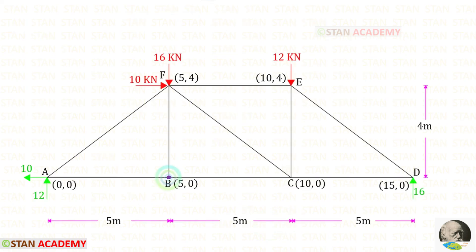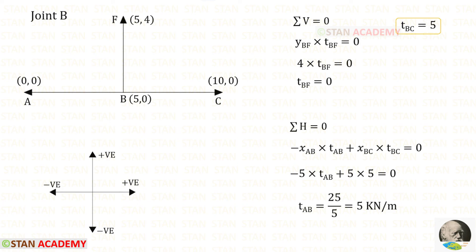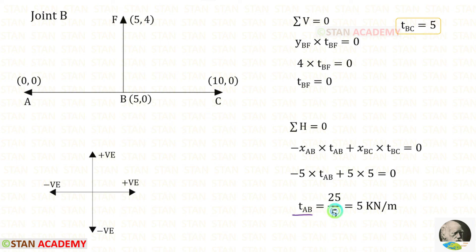Now we take joint B. Applying sigma V = 0: there is only one vertical member BF and no inclined force or vertical load, so t_BF = 0. Applying sigma H = 0: member AB acts leftward (negative) and BC acts rightward (positive). Horizontal distance of AB = 5 − 0 = 5; horizontal distance of BC = 10 − 5 = 5; t_BC = 5. Solving gives t_AB = 5 kilonewtons per meter.